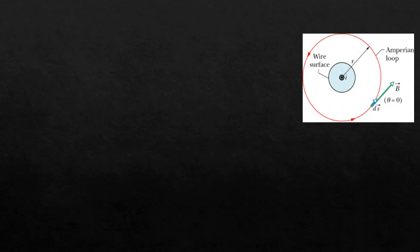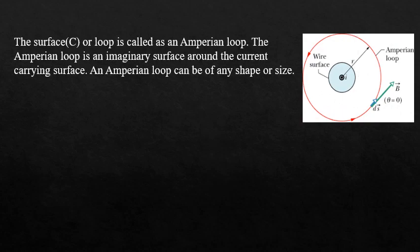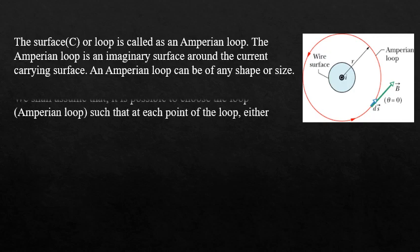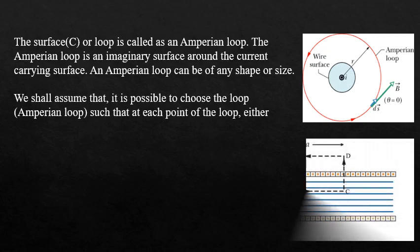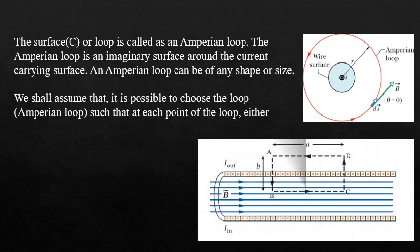The surface enclosing the current carrying conductor is called an Amperian loop. An Amperian loop is an imaginary surface around the current carrying wire, and it can be of any shape or size.